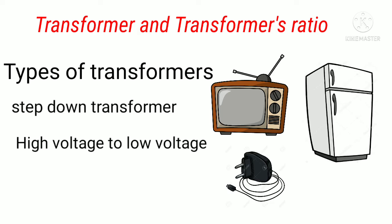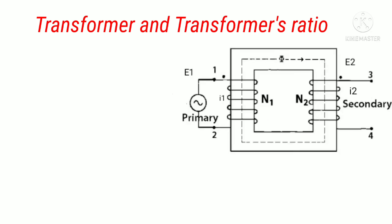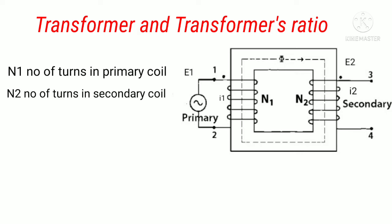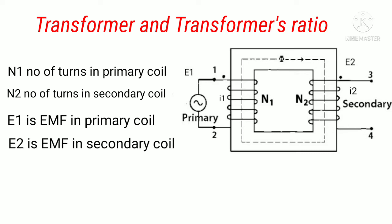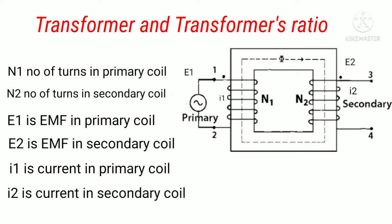Now we discuss about transformer ratio. You see here the image of transformer. Here, N1 means number of turns in primary coil. N2 means number of turns in secondary coil. E1 means EMF in primary coil. E2 means EMF in secondary coil. I2 means current in secondary coil.